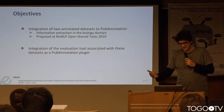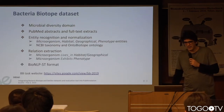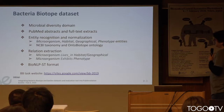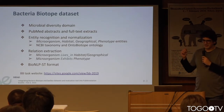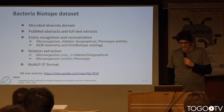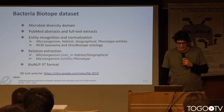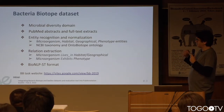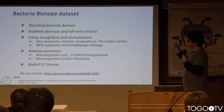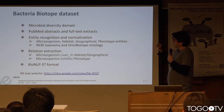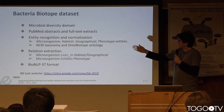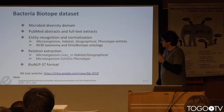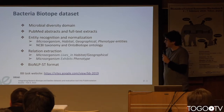The first dataset is Bacterial Biotope, which concerns microbiota diversity and is important in health science, food science, food processing, and environment science. This is a full information extraction task which contains entity recognition and normalization, and also relation extraction. We have four types of entities that are normalized with the NCBI taxonomy for microorganisms, and normalized with the OntoBiotope ontology for habitats and phenotypes.